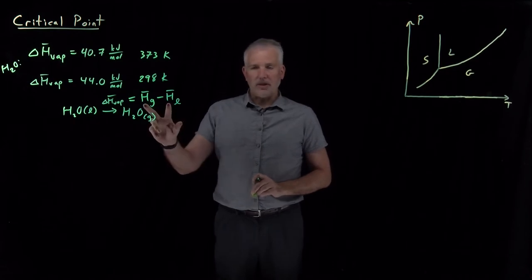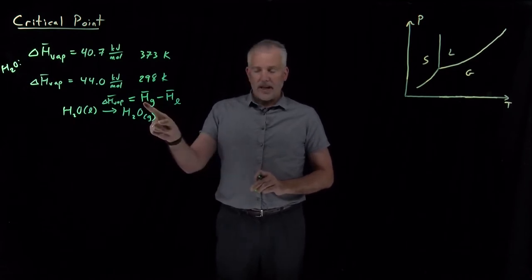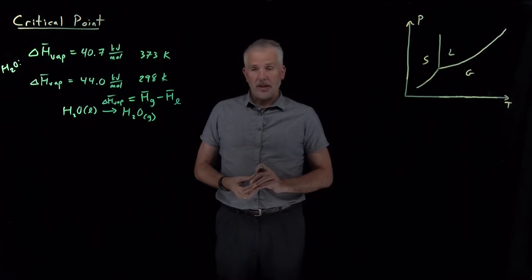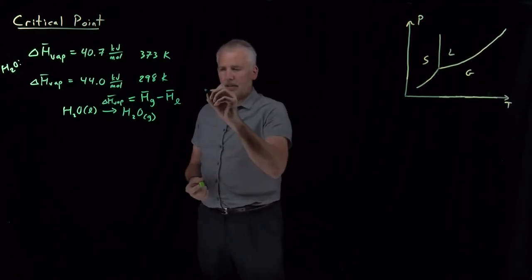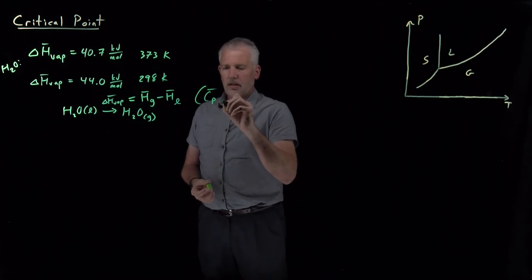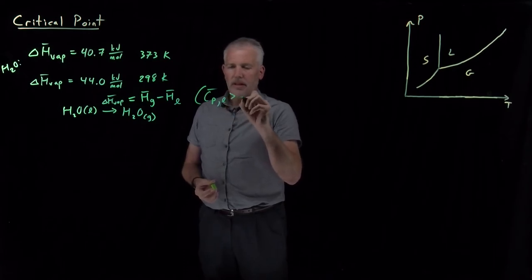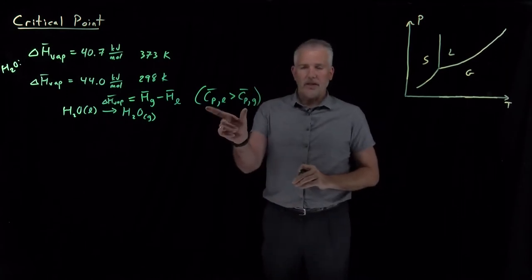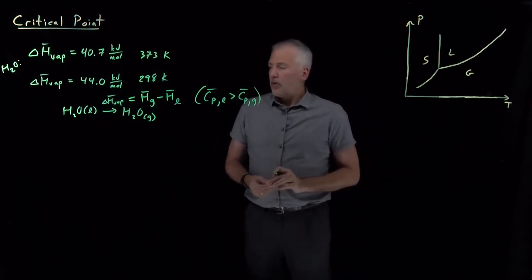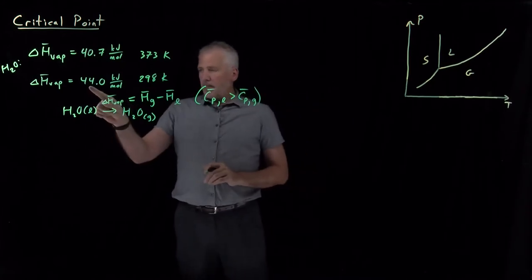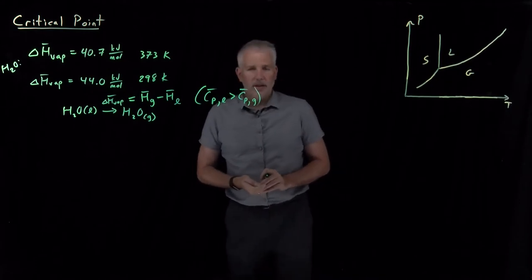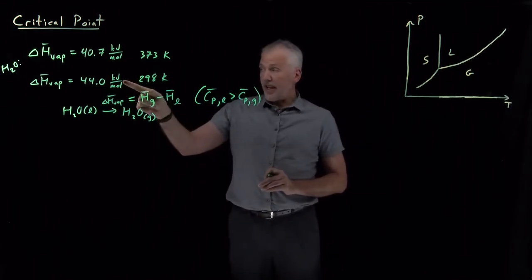The heat capacity of the gas and the heat capacity of the liquid are different numbers. We discussed this when we talked about the equipartition theorem. Importantly, Cp for the liquid is larger than Cp for the gas — that's one of the key results from the equipartition theorem. So it's not surprising that the enthalpy of vaporization differs at different temperatures.